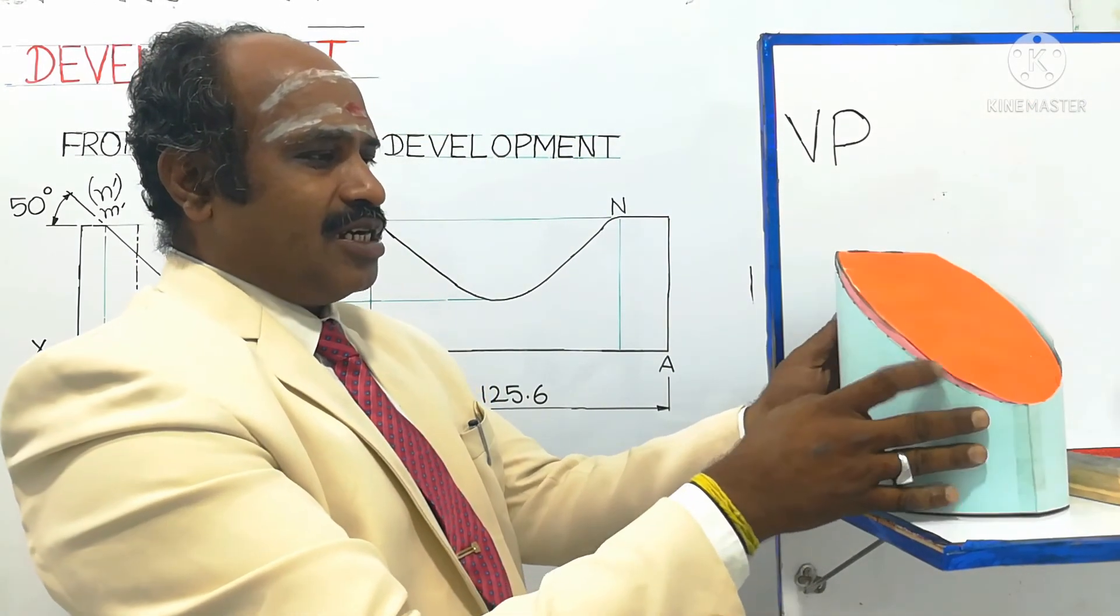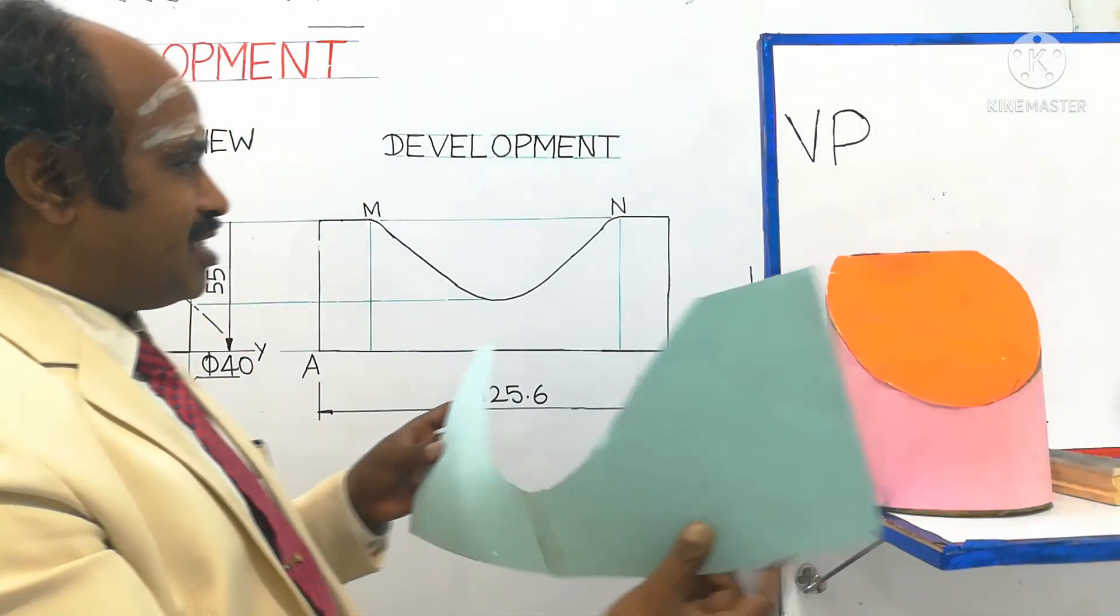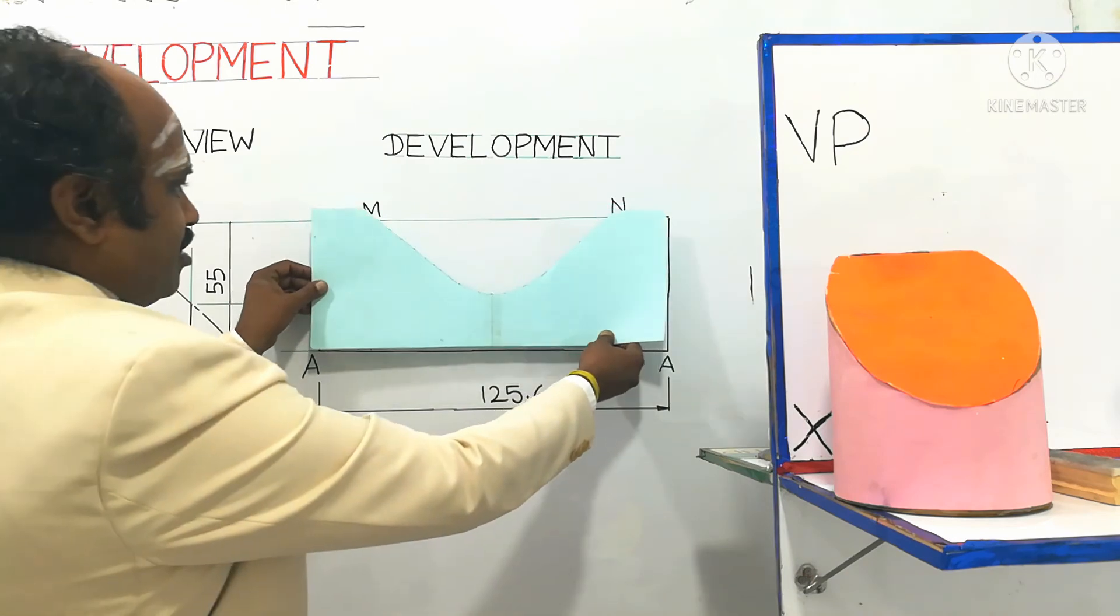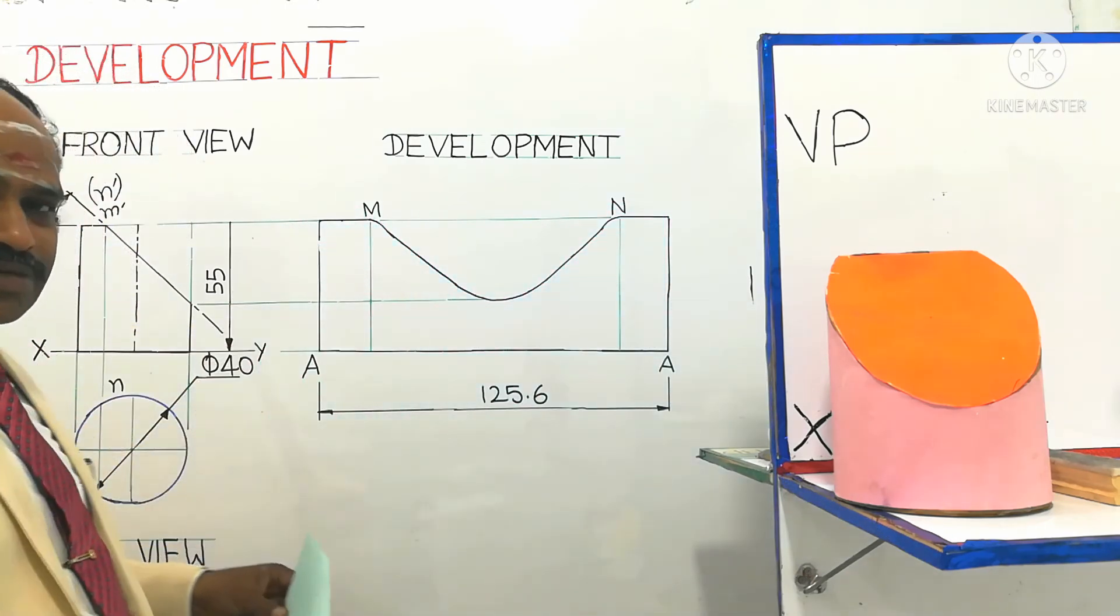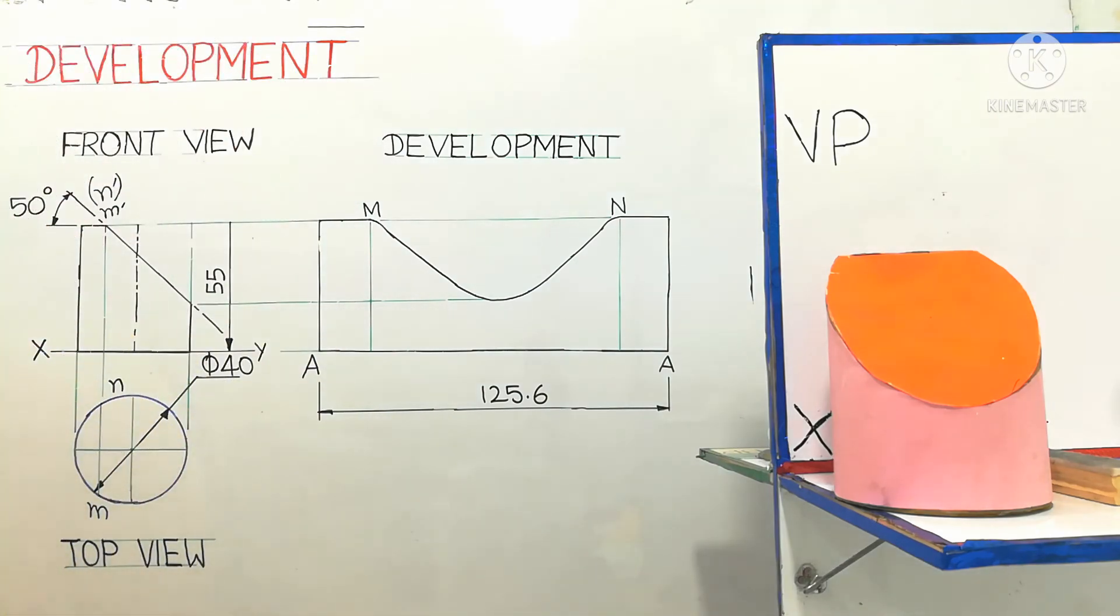For this lower portion of the cylinder, this much sheet is required. It can be estimated using this development diagram. How to draw this diagram is clearly explained using marker board and mini drafter. You can practice and get the correct profile.